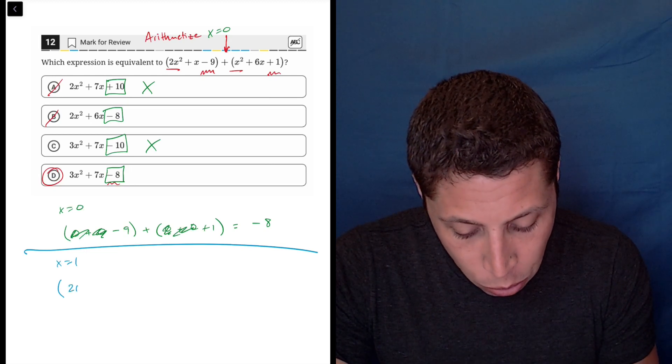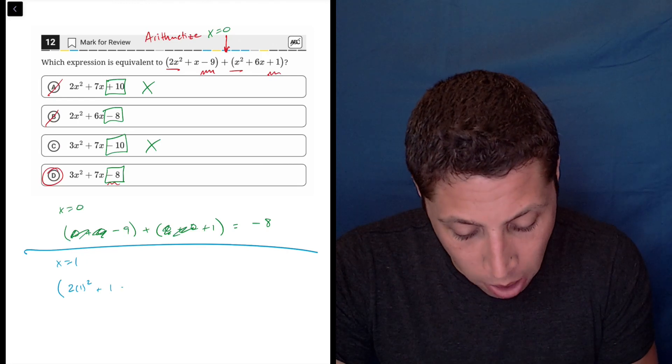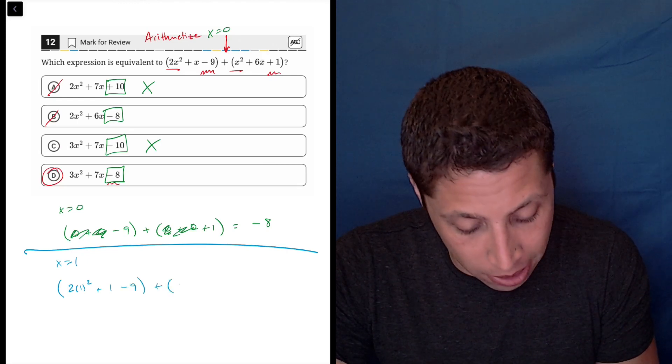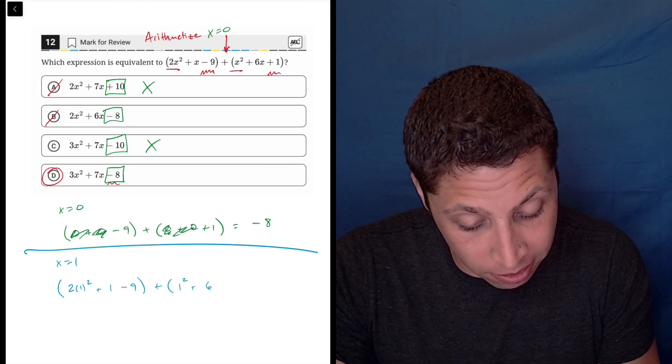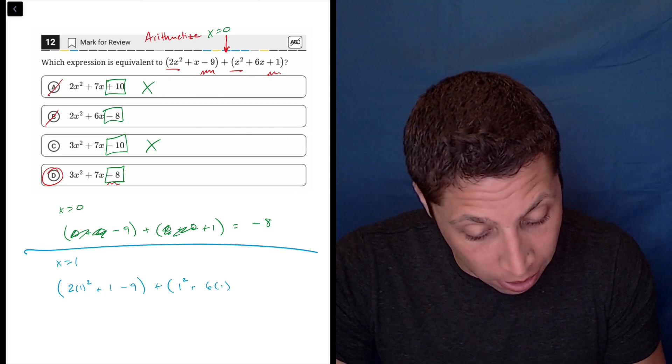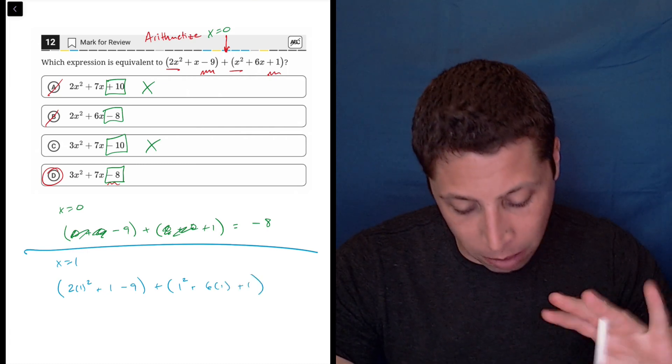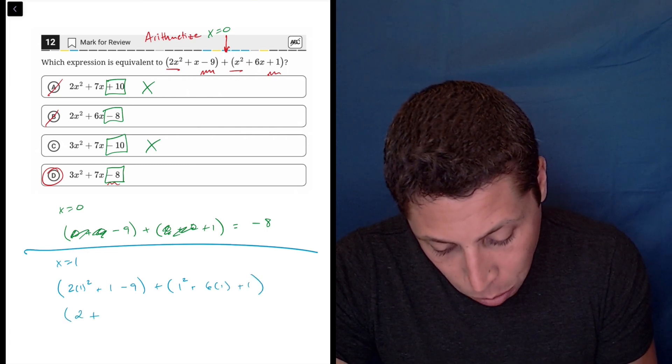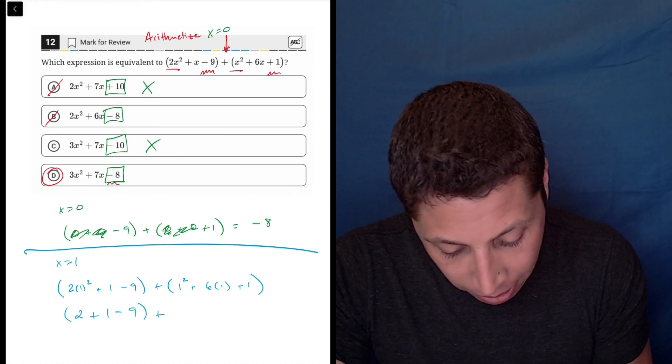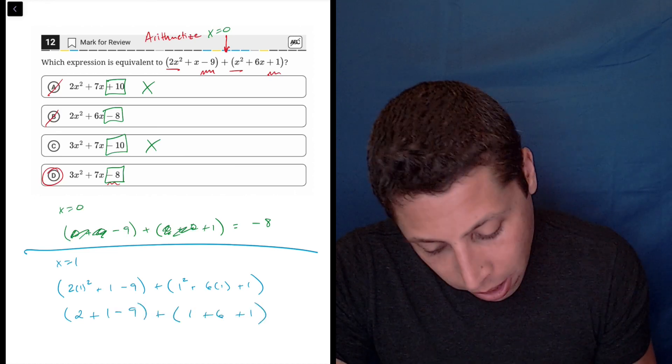So this would be 2 times 1 squared plus 1 minus 9 plus 1 squared plus 6 times 1 plus 1. So again, the ones are going to make things really simple. This is 2 plus 1 minus 9 plus 1 plus 6 plus 1.